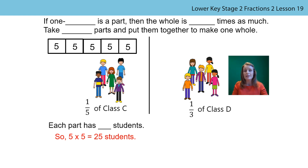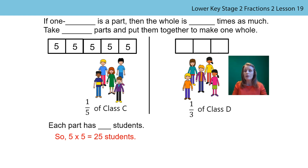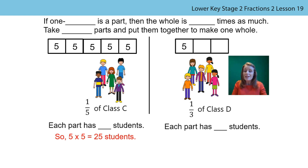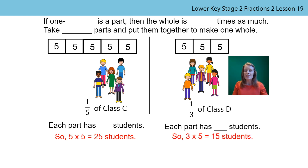Now I did the same for Class D. Can you see the third? The denominator on the bottom shows me there needs to be three equal parts. Here's one equal part, here's my second, here's my third. Each part is a third. But I also need to look at how many are in each part to work out how many students in the whole. Here I have five again — five in one part, five in the next, five in the next. Can you see the multiplication fact I need? Of course, it's three times five — fifteen students. So which class has more students? It is Class C with 25 students. Well done.